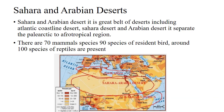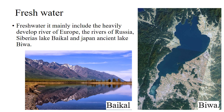The Saharan-Arabian desert is a great belt of desert including the Atlantic coastline deserts. There are 70 mammals, 90 species of resident birds, and around 100 species of reptiles present. The freshwater ecoregion mainly includes the heavily developed rivers of Europe, the rivers of Russia, Siberia's Lake Baikal, and Japan's ancient lakes.